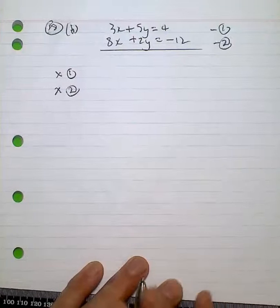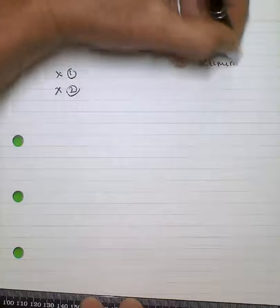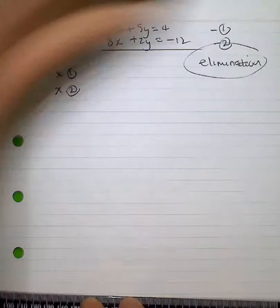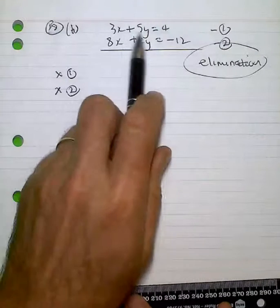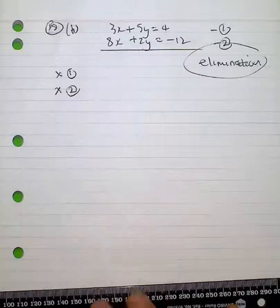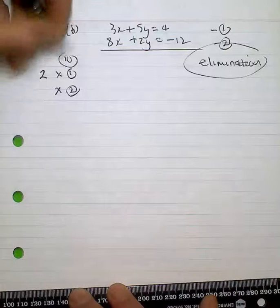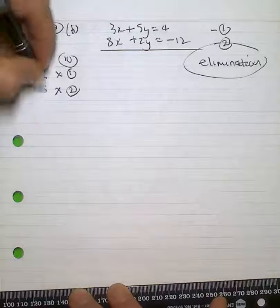In 18b, you're best off using the elimination method. Best thing to do is to look at the lowest common multiple of 3 and 8, which is 24, and 5 and 2, which is 10. So I'm going to choose 10. So multiply equation 1 by 2 and equation 2 by 5.